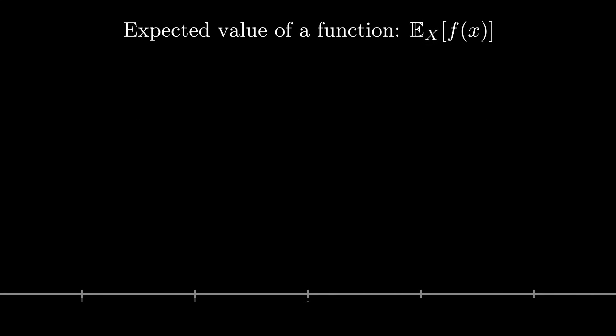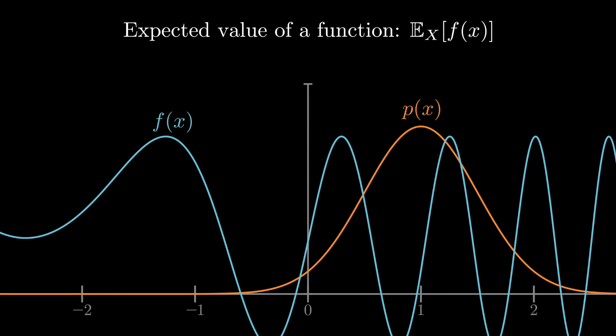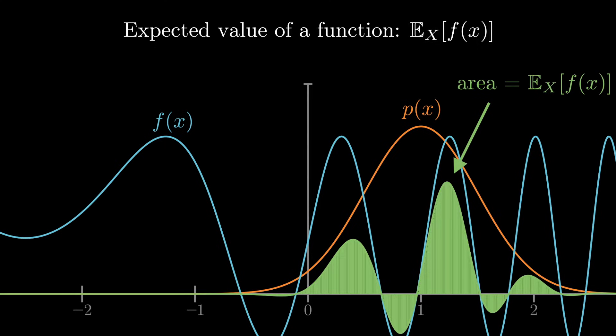To visualize this, the orange curve shows a simple probability density function. This blue line is a function whose expectation we'd like to take. The product of these two functions is shown in green. Finally, we integrate the green line in order to get the expected value.